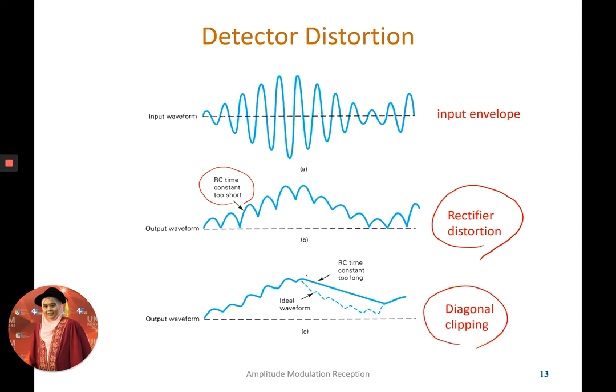One is what we call rectifier distortion. It is our information signal that has from the modulated signal to be not so very smooth. So this is the time constant. So you need to adjust the circuit, the RC, to be nice and it can basically get a smooth waveform instead of this. Try to adjust your RC so they will be ideal. You will get the ideal waveform.